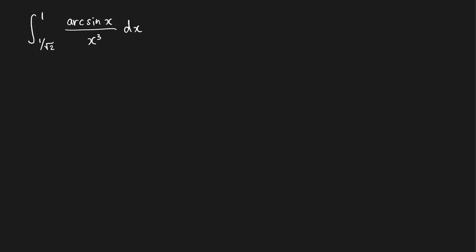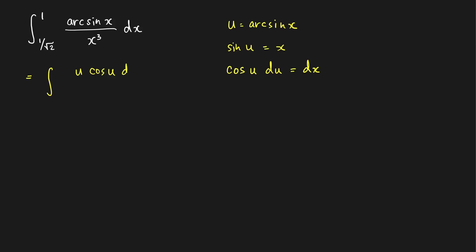Let's try u-substitution. So let u be equal to arcsin(x). If this is our u, then sine of u will be equal to x. Differentiating, we get cosine(u) du = dx. Therefore, we can write our integral as the integral of arcsin(x) — that is u — and then our dx is cosine(u) du, over x cubed, which equals the cube of sine(u).